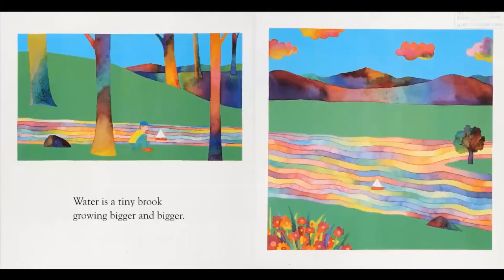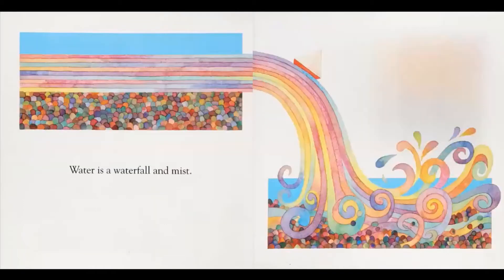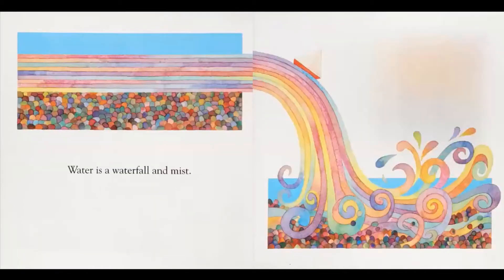Water is a tiny brook growing bigger and bigger. A brook is like a really small river. Water is a waterfall and mist. Mist is when the water looks like steam and it's cloudy out.